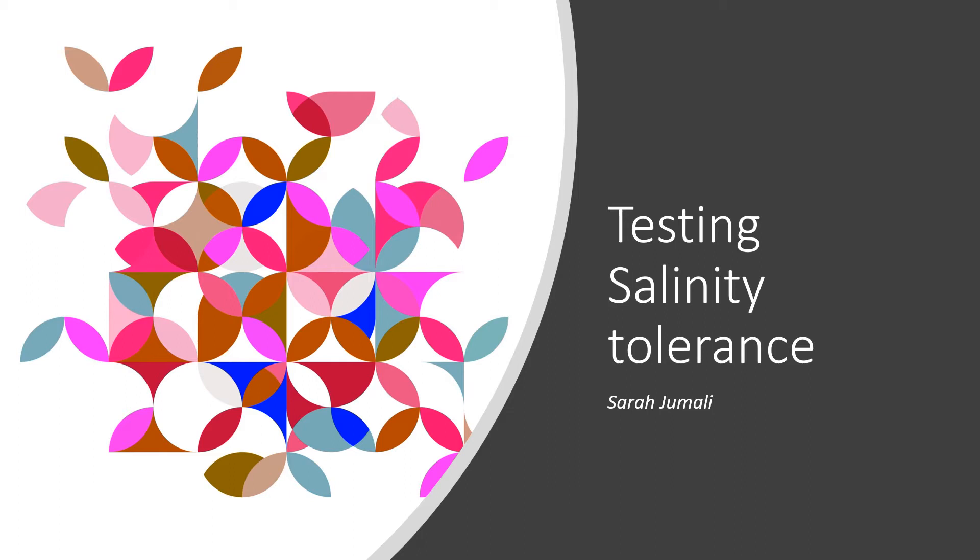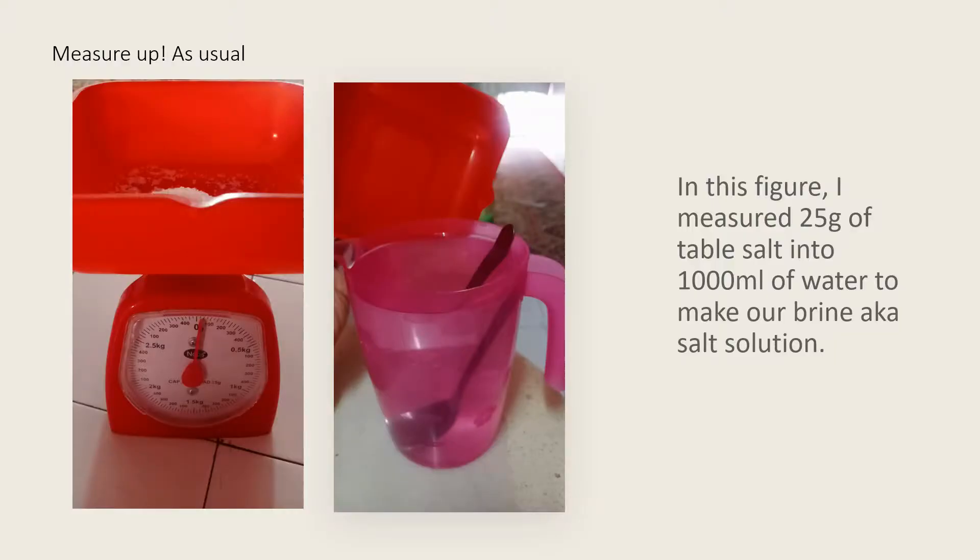For today's lab we're going to test the salinity tolerance of a plant. You can use any choice of plant. The first thing you need to do is measure as usual. Since my weighing scale is not that great, I have just weighed 25 grams of table salt and then poured it into my 1000 milliliter jug which contains 1000 milliliters of water.